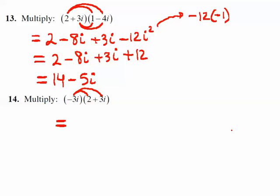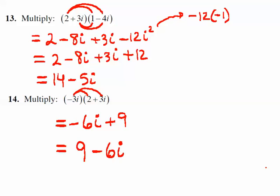For example 14, think of it as the distributive property. Negative 3i times 2 is minus 6i. Negative 3 times positive 3 is negative 9, but there's an i squared so it becomes plus 9. The real part must go first: 9 minus 6i. That's your answer.